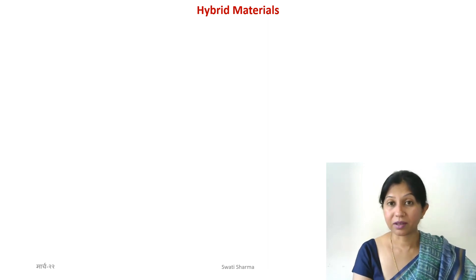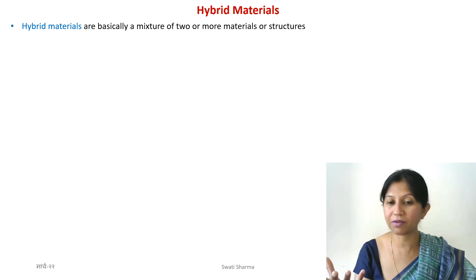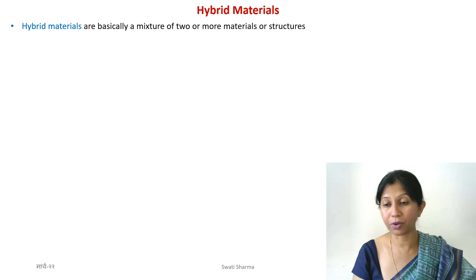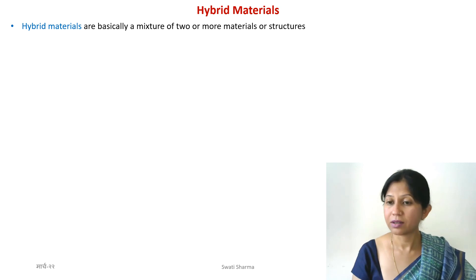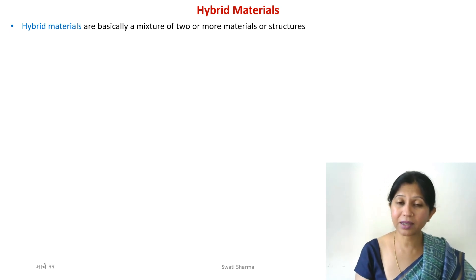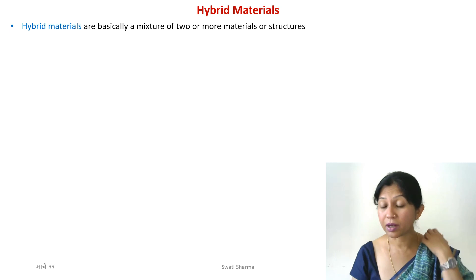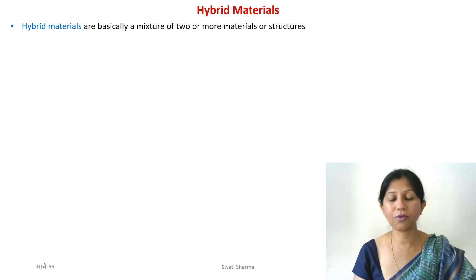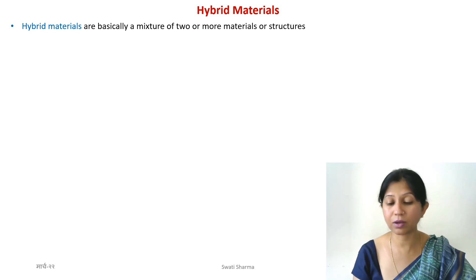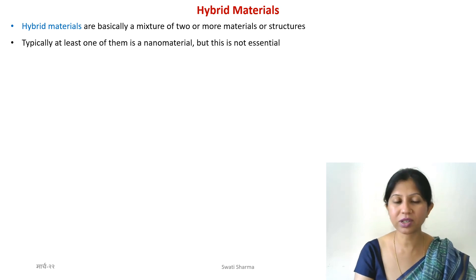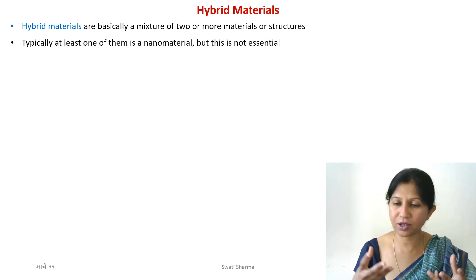Coming to hybrid materials — hybrid is something very new and a little bit fashionable. These are materials which are a mixture of not just two but usually more than two components, and at least one of them is a nanomaterial. They are currently called hybrid materials, but this is not the only definition because we also have some hybrid structures which have nothing to do with nanomaterials. So don't get confused when you look for the definition of hybrid materials online — you will find multiple definitions.